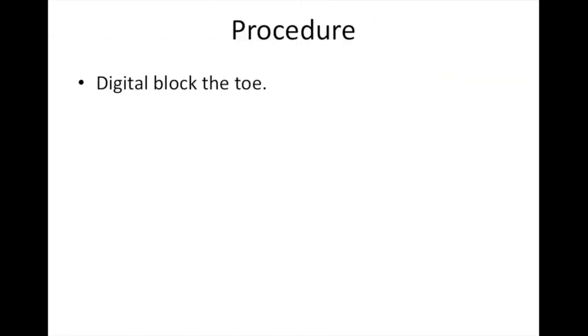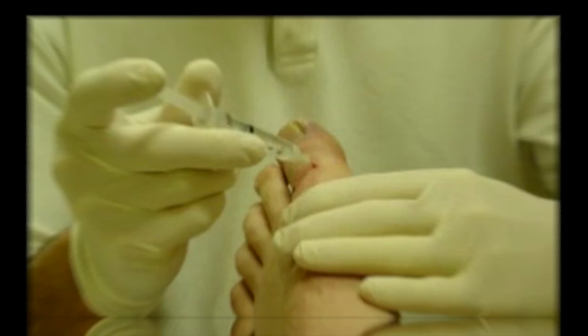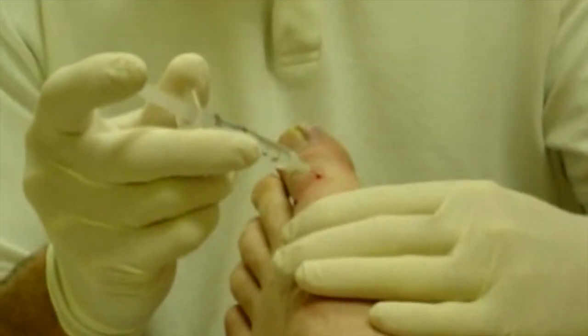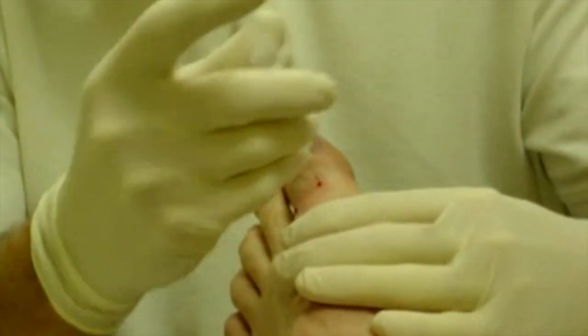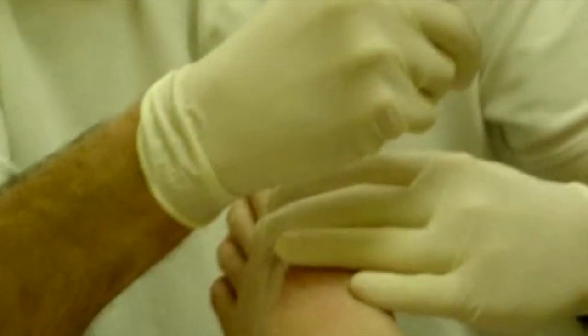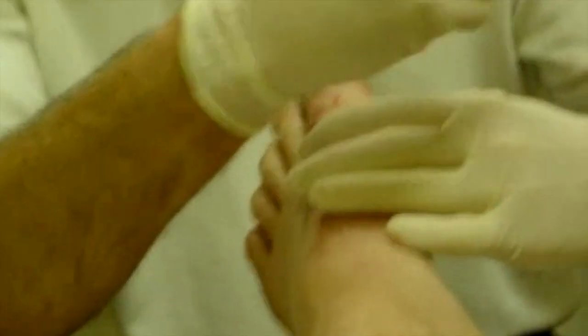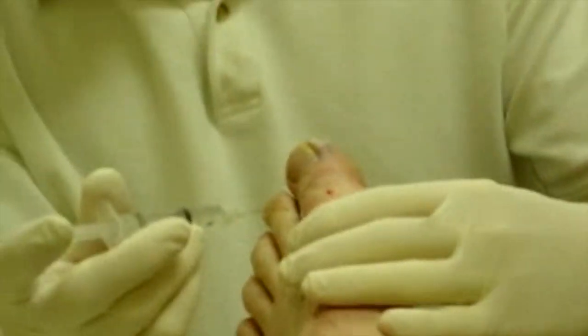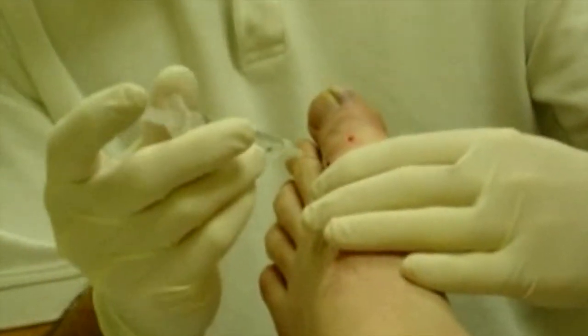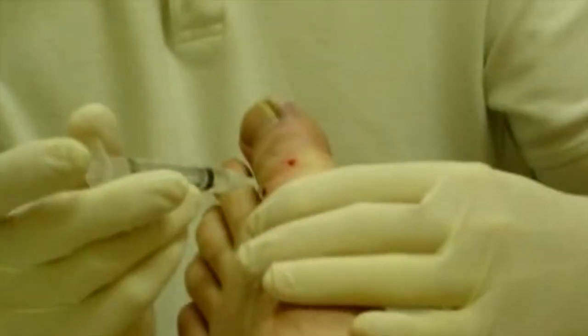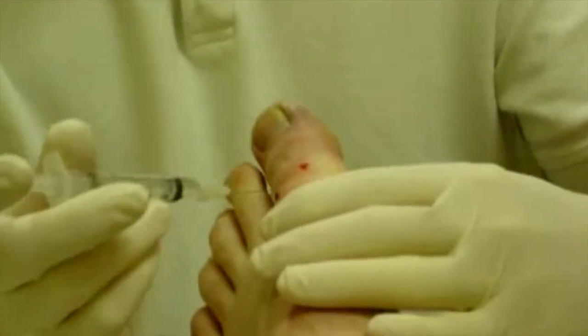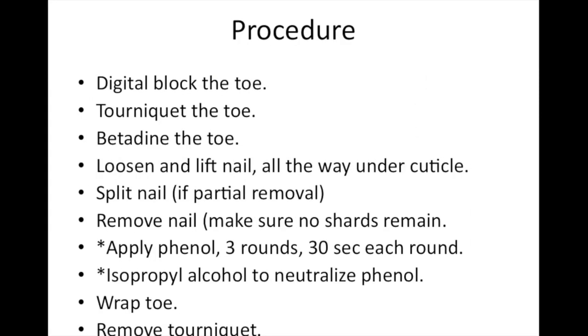For the procedure itself, first we want to do our digital block. Prep the toe, then do the block. The doctor first injected along the medial aspect of the toe, then the dorsal, and then the lateral. Let's put this all together to see what it looks like.